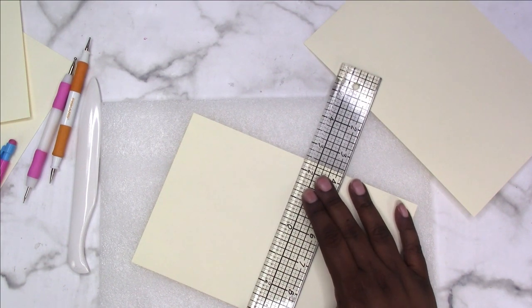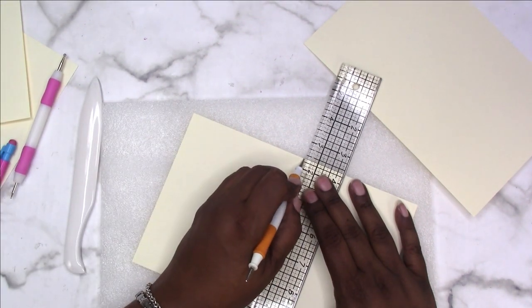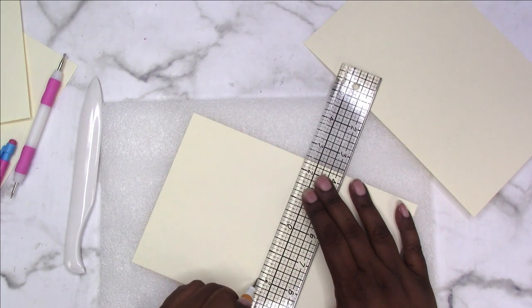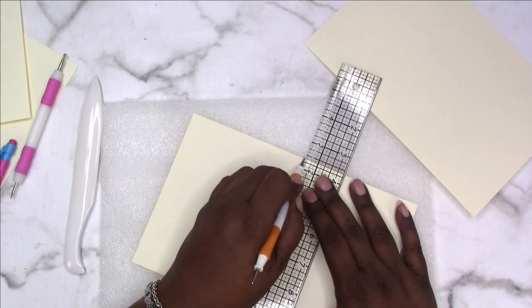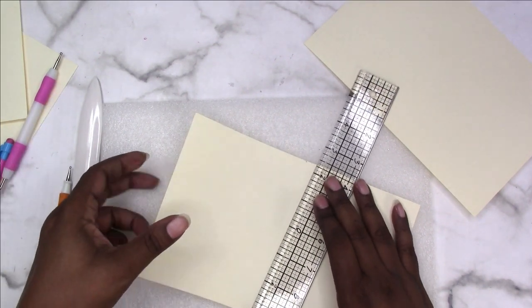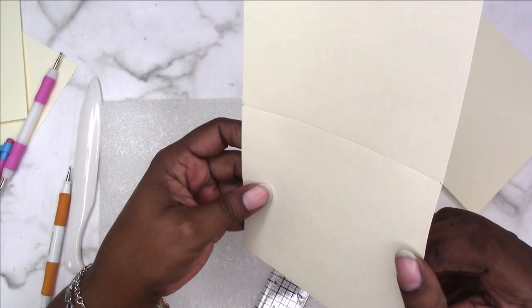Then I'm going to take my stylus and carefully, without too much pressure, slide down to score my paper against the edge of the ruler. That gives us a pretty nice score. Then I would carefully erase the tick marks.